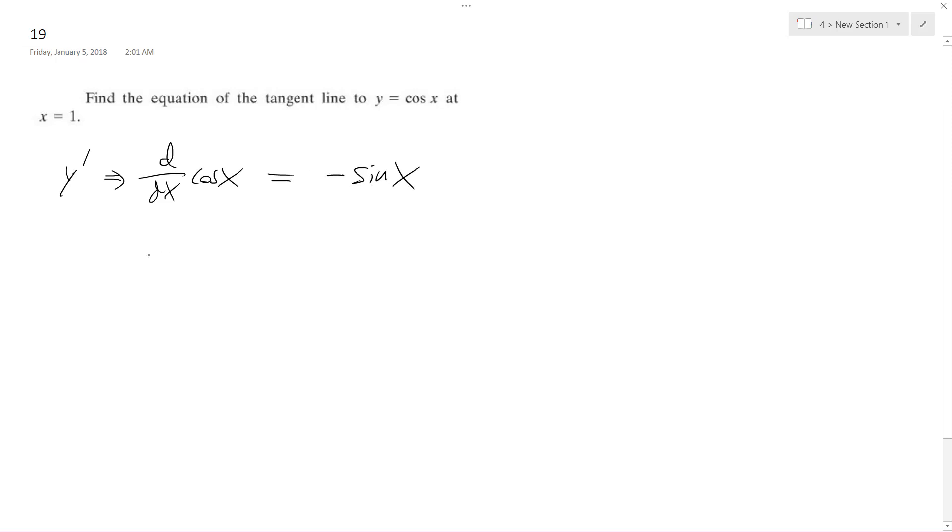So x equals 1. We're going to take negative sine of 1. This is going to be my slope. I'm leaving it in this form. You can use a calculator, but it's going to be a messy decimal.